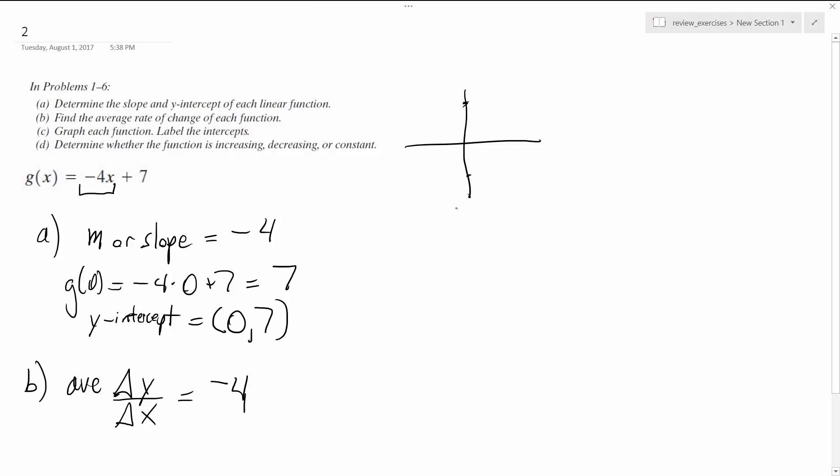And then we want to graph this, so this will be part c over here. So 1, 2, 3, 4, 5, 6, 7. So there's 7, and then we have it's got a slope of negative 4, so for everyone it goes down 4. So actually it'd be a little bit down here. So it looks something like this.